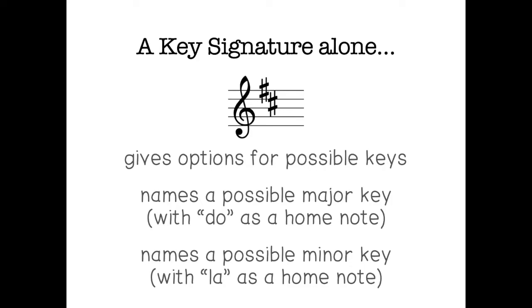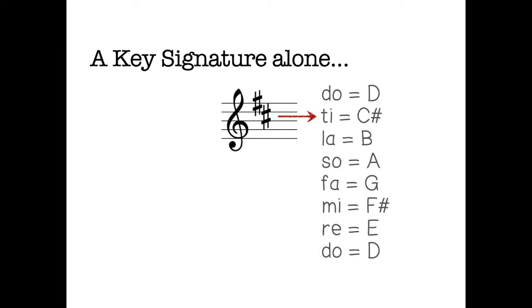So let's just look at that process again. We used the key signature to assign the solfa. And we know that a major key is always based around do. And with this key signature, do has the letter name D. And that tells us that D major is the possible major key for this key signature. So we have to remember the link between do and major to be able to do this.